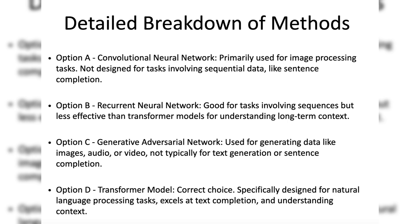Option C, generative adversarial network: GANs are used for generating data such as images, audio, or video through a process of pitting two networks against each other. GANs are not typically used for text generation or sentence completion tasks.